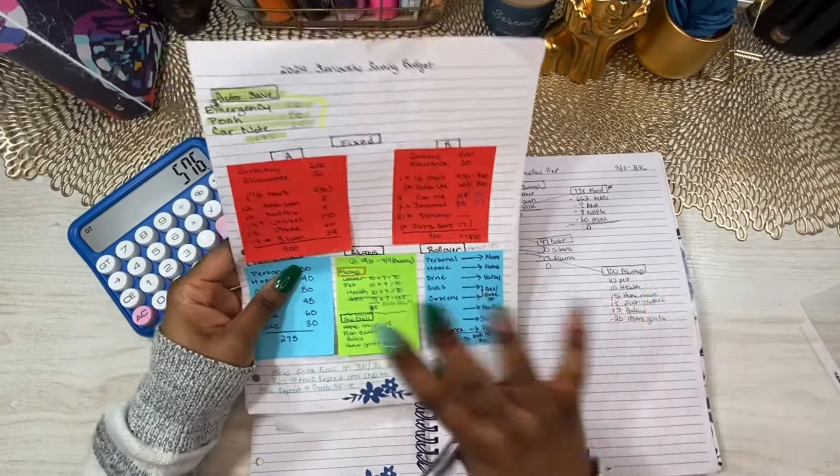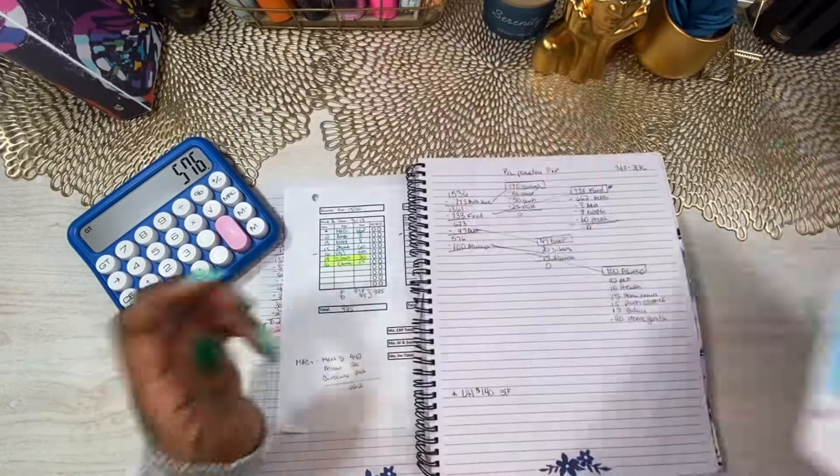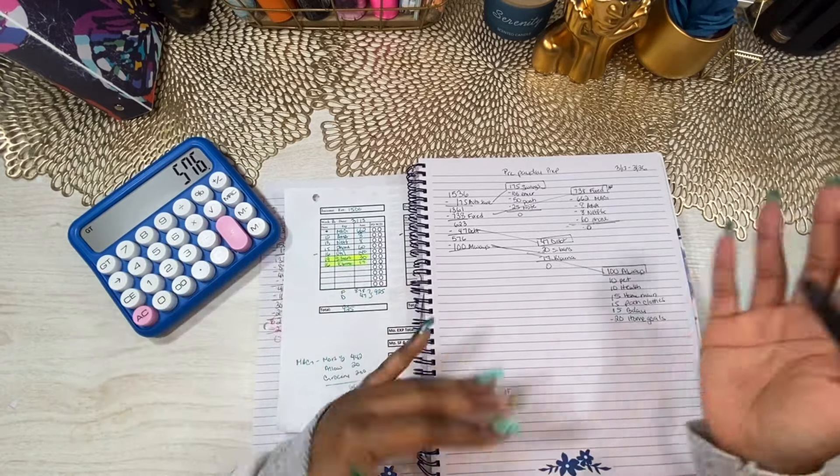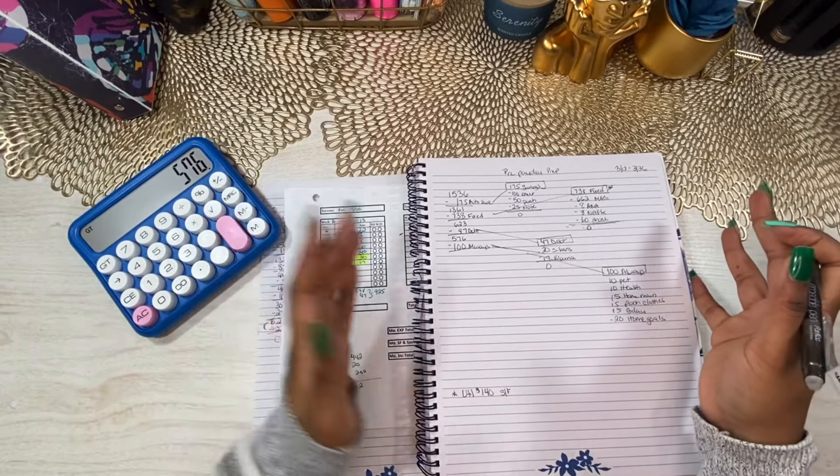So this cheat sheet is everything because these are the things that I'm paying every pay period. The only thing that really changes is maybe debt and putting more to that or unexpected things that come up.